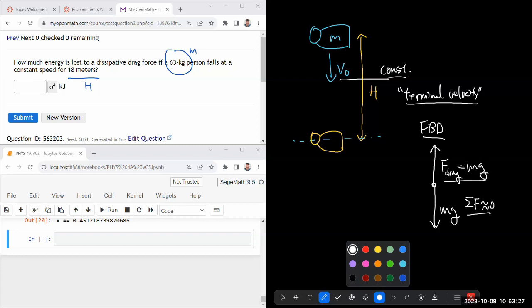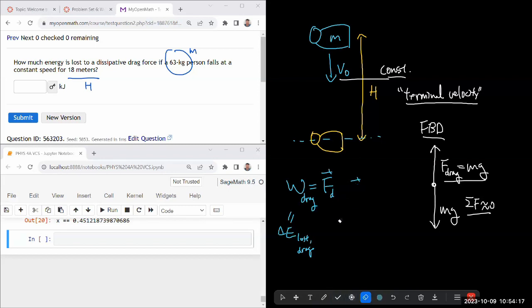So with all that, the question is asking how much energy is lost to a dissipative drag force if the person falls at a constant speed. So you have two different ways of approaching this question. You could use the definition of work. So basically calculate the work done by drag, which will lead to the energy lost due to drag. So you could calculate work done, the displacement, that product with force. That works. Now, looking at where in our textbook this question is, I think it might make more sense to, instead of using work being done, instead use conservation of energy.